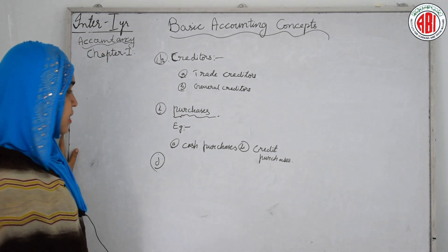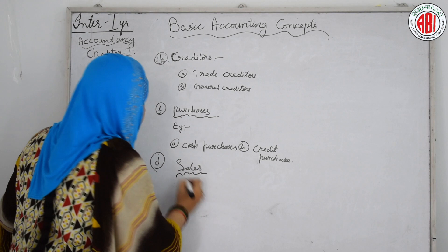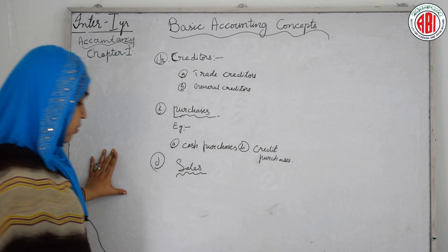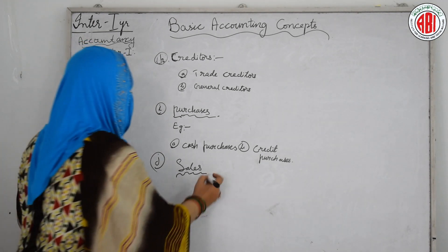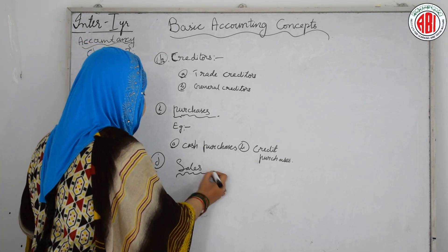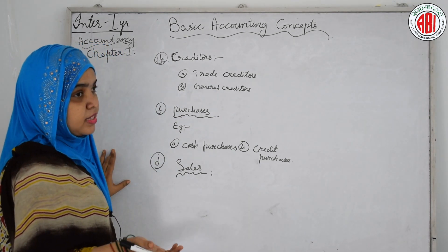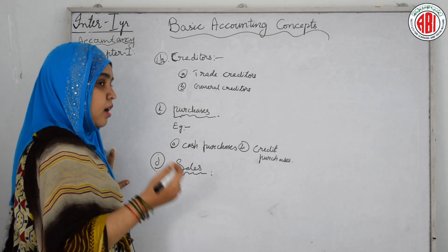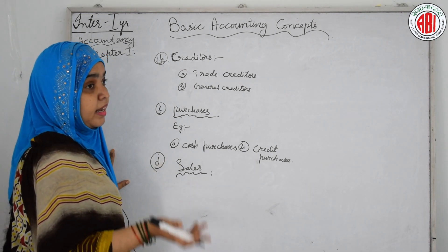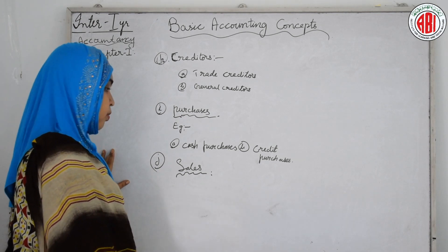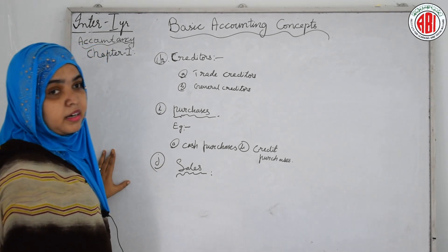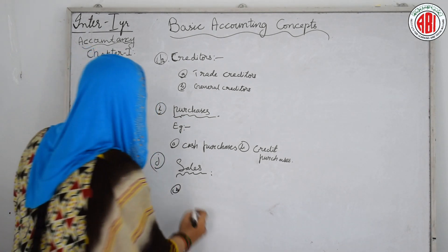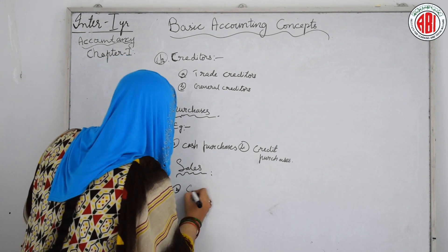Unlike purchases, sales is the income from the business. While selling, we can get income. Sometimes we have to sell furniture, machinery, raw materials, computers, and other items. These sales come under the category of nominal accounts as well, and sales are also in the form of cash sales and credit sales.